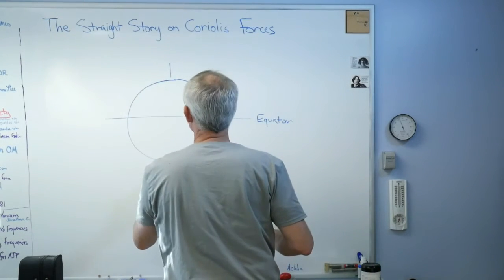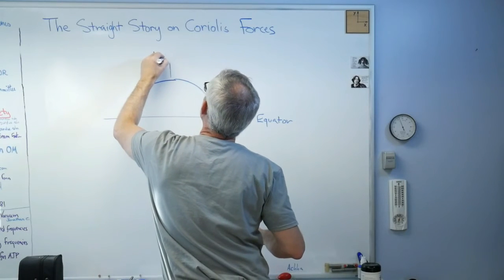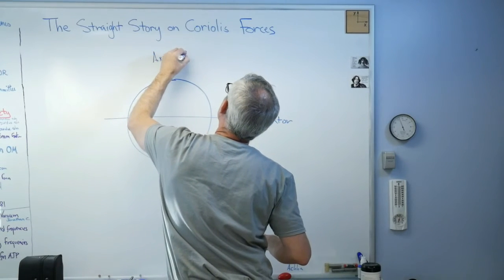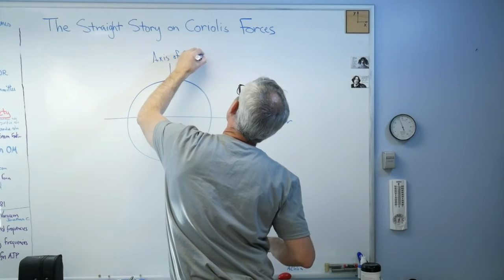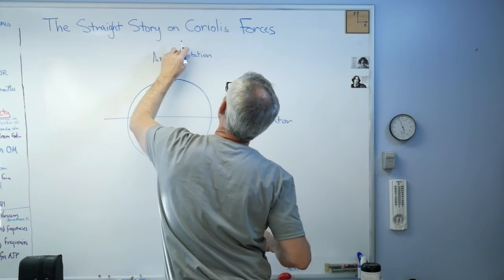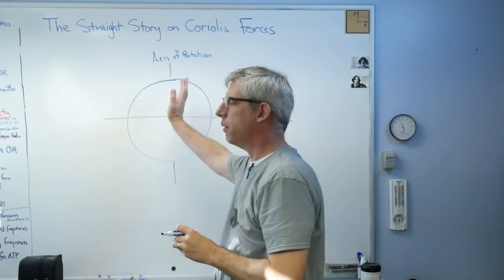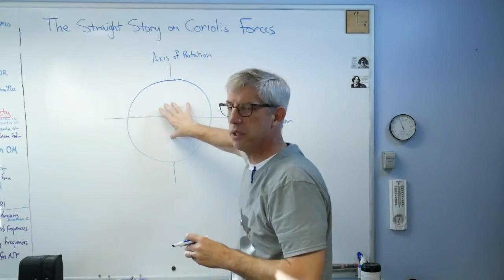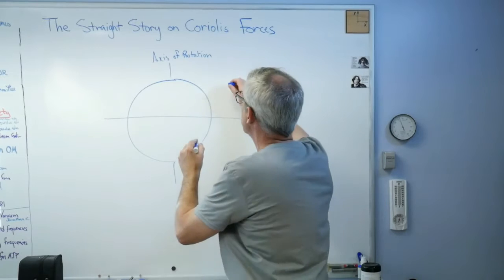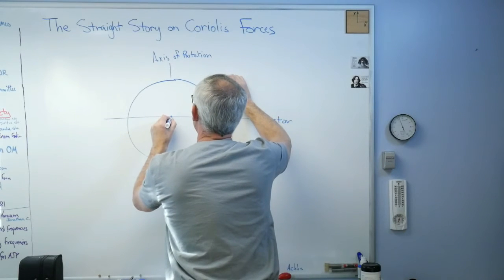And of course here's the axis of rotation. Yeah, I know it's tilted at 23 degrees, whatever, but for right now let's just deal with it that way. So let's say I've got some giant cannon, whatever it is, and I'm on the equator and I'm going to shoot north.